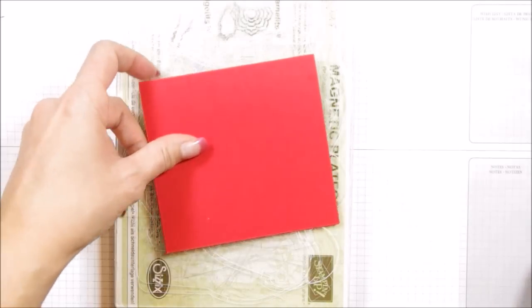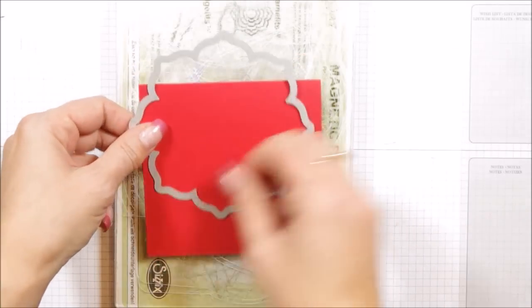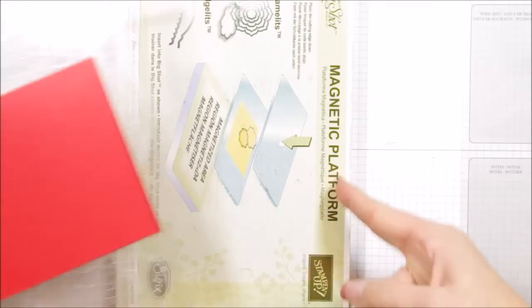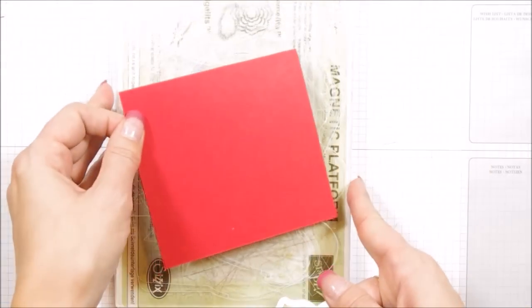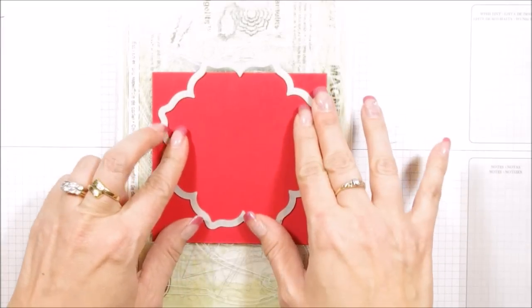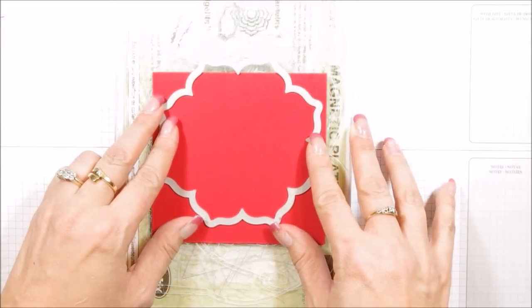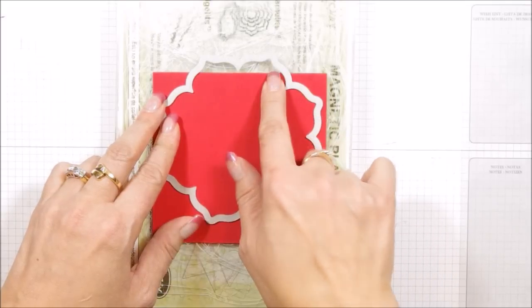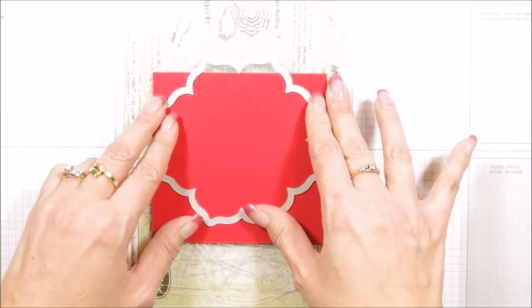So we're going to take our floral frames framelits. We've already folded here. It's easiest with your magnetic platform. So we're going to take that, put our acrylic plate, and put your cardstock on. And you want to have it so that it doesn't cut the crease mark. So we're just going to put it right over the crease mark.